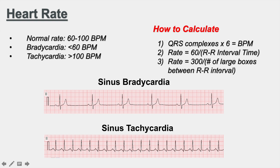Applying method one to the sinus bradycardia strip, we count six QRS complexes. Six times six is 36 beats per minute — that is sinus bradycardia.